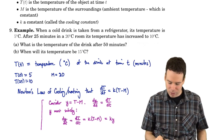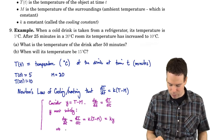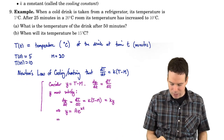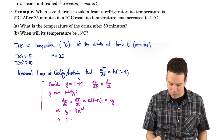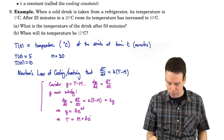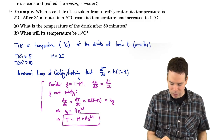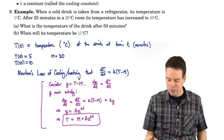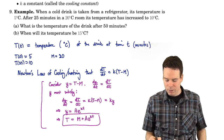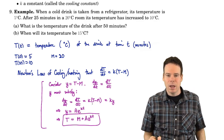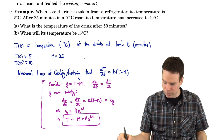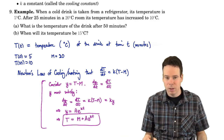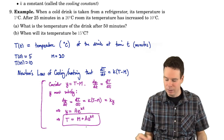A function whose derivative is a multiple of itself must be an exponential: y = Ae^(kt). Since T = y + M, we get T = M + Ae^(kt). We've found the function T that satisfies Newton's law of cooling by using our knowledge of the exponential growth and decay equation. Any function T satisfying Newton's law of cooling must be of the form M + Ae^(kt).